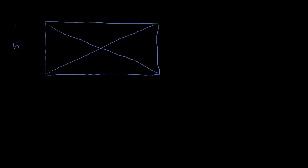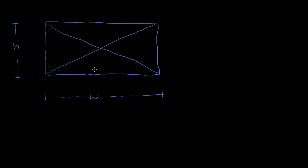This rectangle has a height of h — so that distance right there is h. And it has a width of w. What we're going to show in this video is that all of these four triangles have the same area.